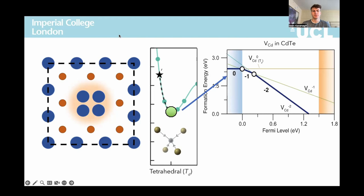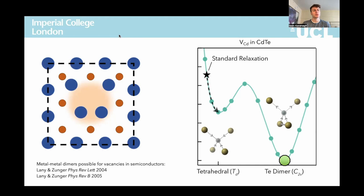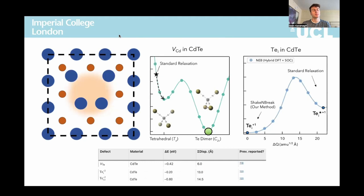Then I read some papers by Lanny and Zunger from the early 2000s, where they found these metal-metal dimer reconstructions in vacancies in chemically similar materials, and I began to wonder whether this was possible in my system. So I tried manually moving two atoms closer together before then relaxing, and — wow — that gives me a lower-energy defect structure. So I went and looked at some of the other defects I'd calculated that had some chemical similarities, moved a few atoms around, and — wow — they're lower-energy too.